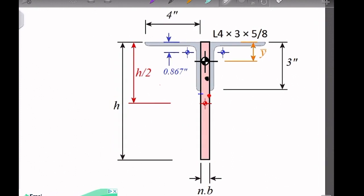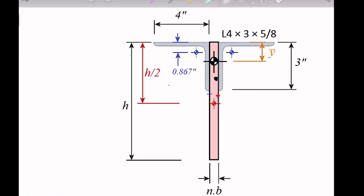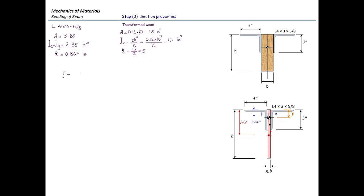With the transformed section defined, we calculate the centroid location y-bar. The x-distance of 0.867 inches gives the distance of each L-shape centroid from the top. Using y-bar = Σ(A·y) / ΣA: two L-shapes contribute 2×(3.89×0.867), and the transformed wood contributes 1.2×5. Dividing by the total area gives y-bar = 1.42 inches from the top.